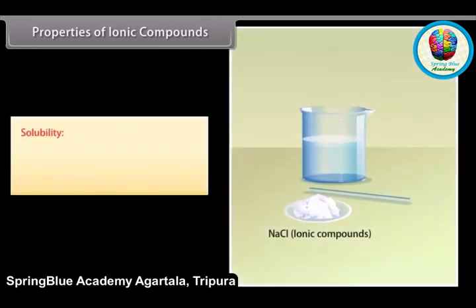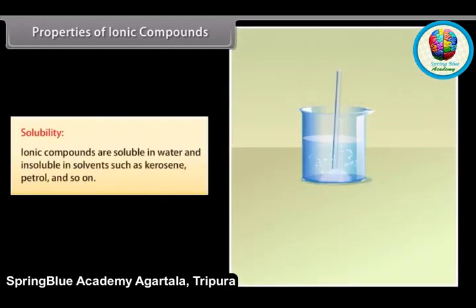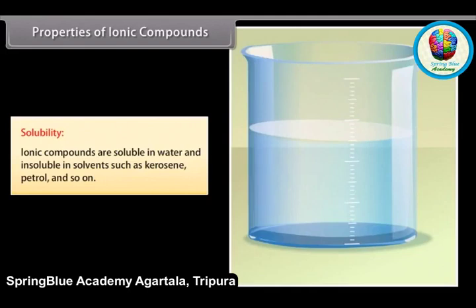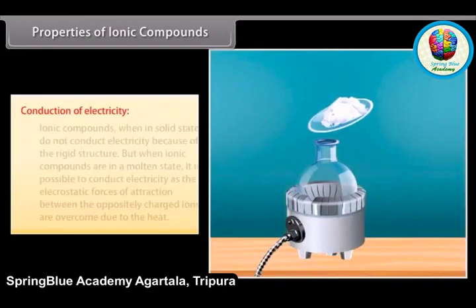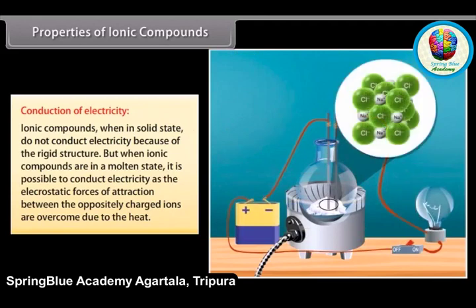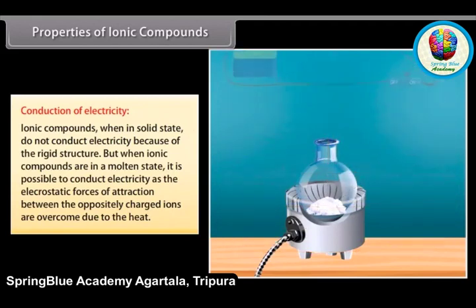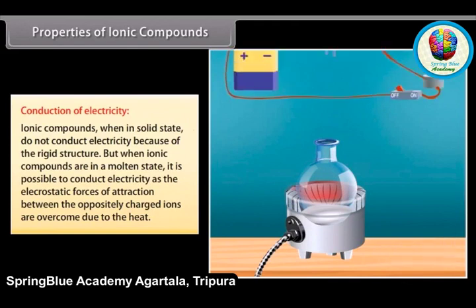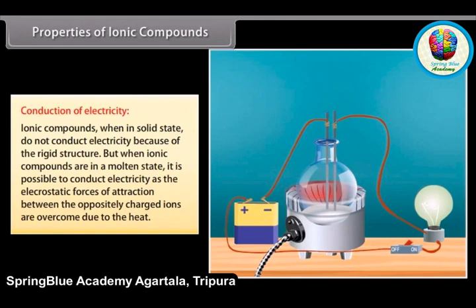Solubility: ionic compounds are soluble in water and insoluble in solvents such as kerosene and petrol. Conduction of electricity: ionic compounds in solid state do not conduct electricity as the movement of ions is not possible due to the rigid structure. But when ionic compounds are in a molten state, they can conduct electricity as the electrostatic forces of attraction between oppositely charged ions are overcome due to heat, allowing ions to move freely.